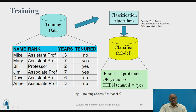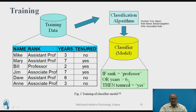This training dataset is fed into a classification algorithm. There are different types of classification algorithms — for example, decision tree, rule-based, back propagation, SVM, and association rules. One of these algorithms is used, and its output is given to the model. The model classifies the data into different classes. The rule produced is: if rank equals professor, or the number of years worked is greater than 6, then tenure is yes; otherwise, tenure is no.